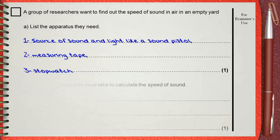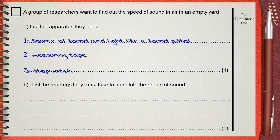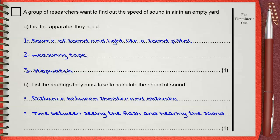Question B. List the readings they must take to calculate the speed of sound. As mentioned in the experiment, we need to measure the distance between the shooter and the observer. Also we need the time between seeing the flash and hearing the sound.